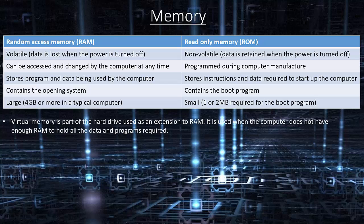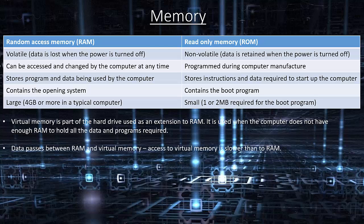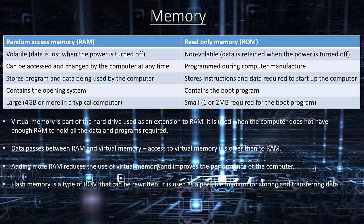Virtual memory is part of the hard drive used as an extension to RAM. It is used when the computer does not have enough RAM to hold all the data and programs required. Data passes between RAM and virtual memory. Access to virtual memory is slower than to RAM. Adding more RAM reduces the use of virtual memory and improves the performance of the computer. Flash memory is a type of ROM that can be rewritten. It is used as a portable medium for storing and transferring data.